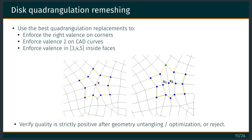The first step is to remove all the highly irregular vertices introduced by the frontal approach and the subdivision. Sometimes we have valence-8 vertices, for instance, and we want to remove them. On the boundary, on the curve, we can have valence 3 or 4 instead of 2.